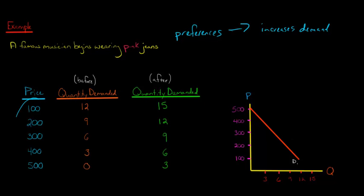Well, at each price, at each of these prices, now there is a higher amount, a higher quantity demanded. So at $100, before it was that they demanded 12 pairs of pink jeans, but now it's 15.